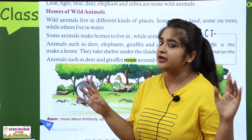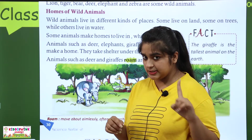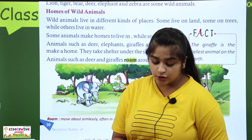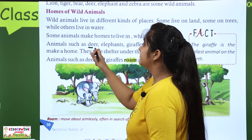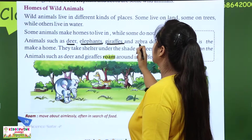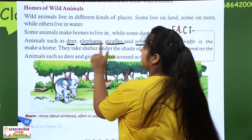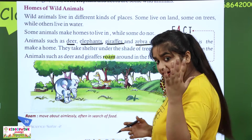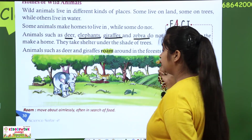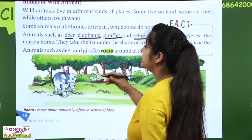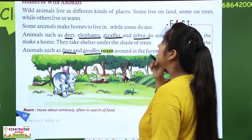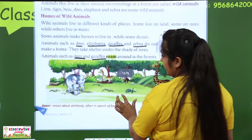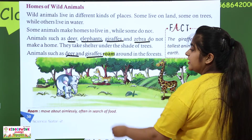Some animals do not make a home. Animals such as deer, elephant, giraffe and zebra do not make a home. They take shelter under the shade of trees. Animals such as deer and giraffe roam around in the forest.